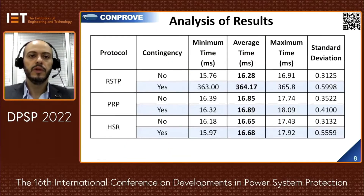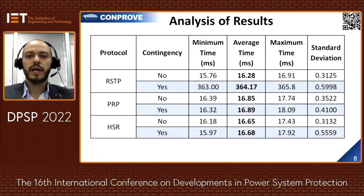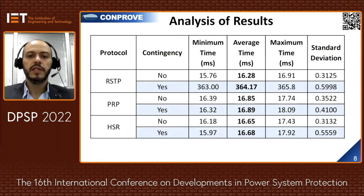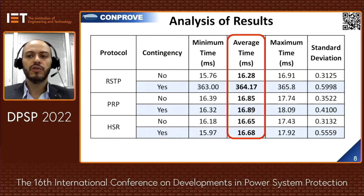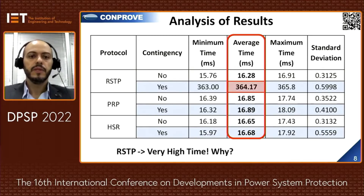In this table, there is a statistical analysis summary of the trip times in each case — protection tests with and without contingencies — comparing the three redundancy protocols. Analyzing the average trip time, it is possible to verify that with PRP and HSR, the average times were very close to each other when link loss occurred. However, with RSTP, the average trip time was very high when the communication path was lost.